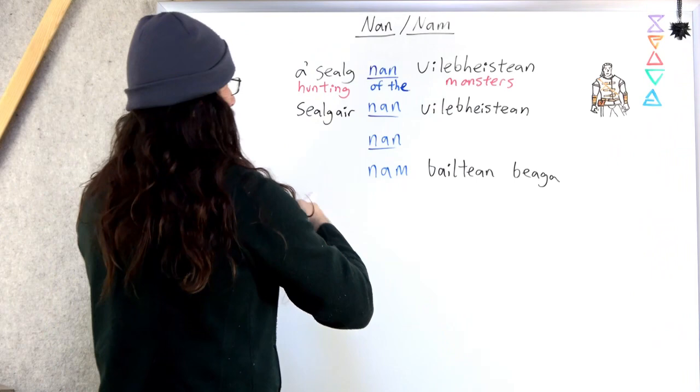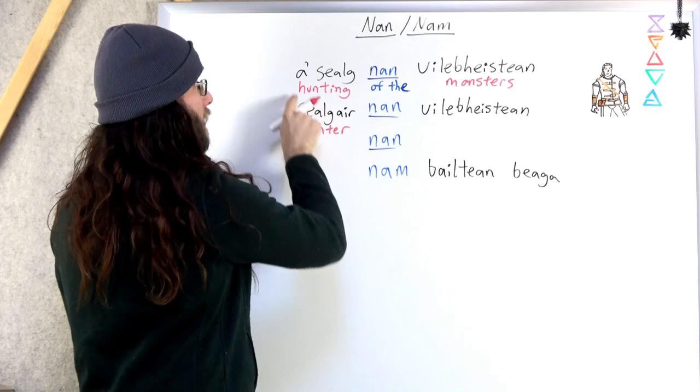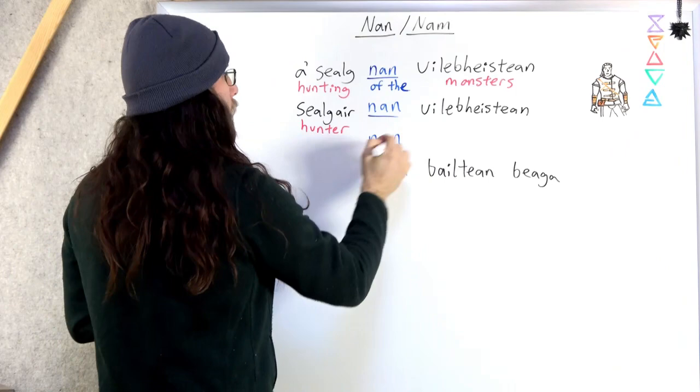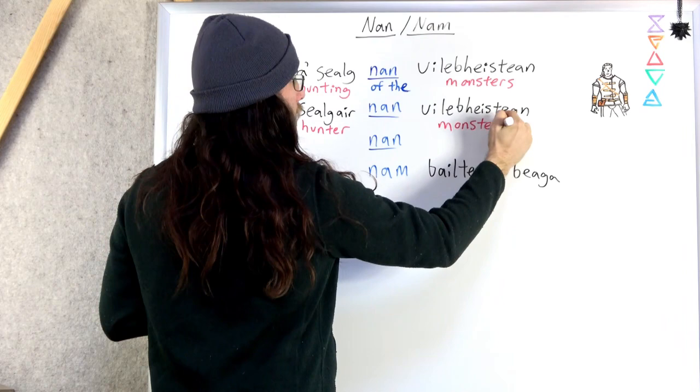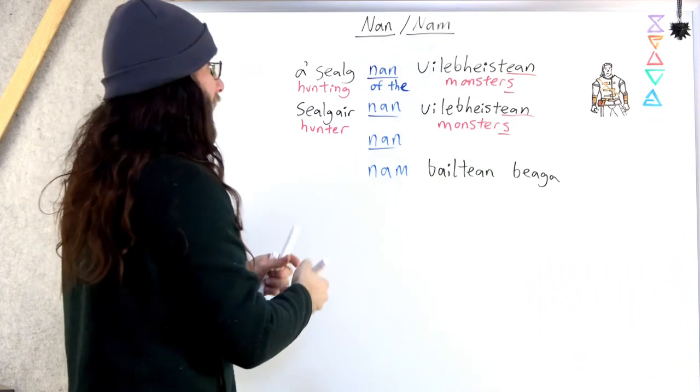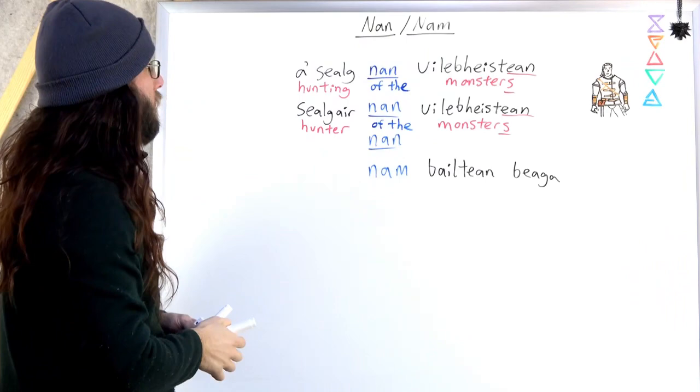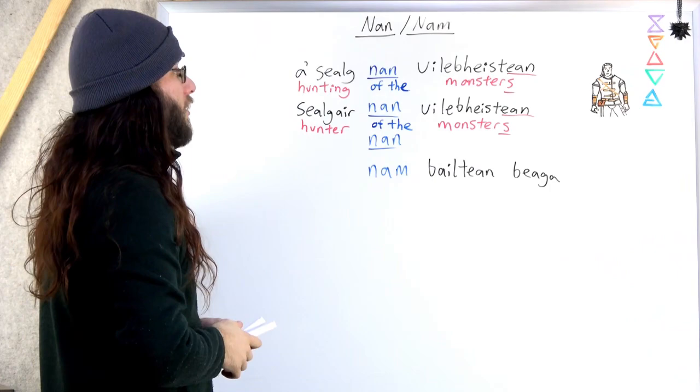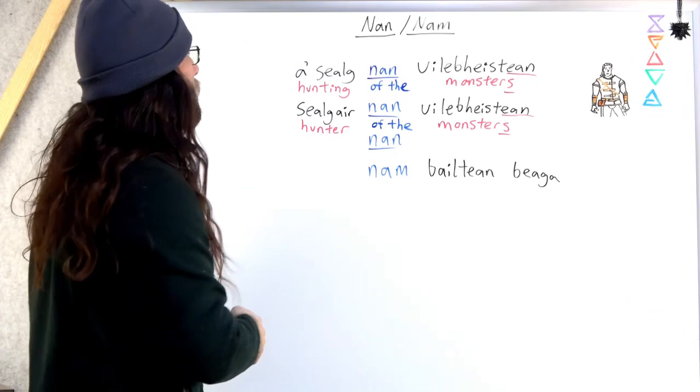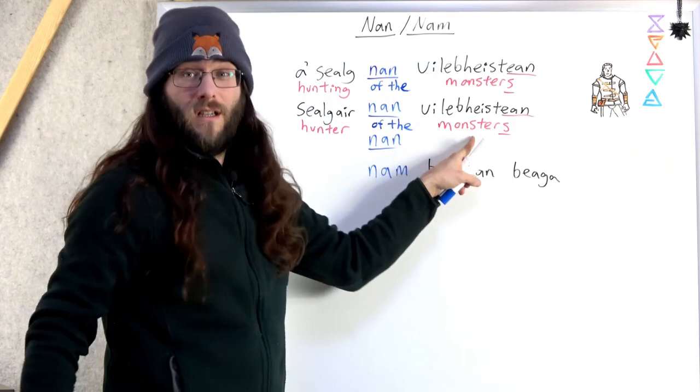Coming down here, a similar example. Geralt, our friend Geralt here, is a shalak nan uleviščin. Hunter. So this is the thing. This is the action. Notice they're very similar. They have the same root. Shalak nan uleviščin. Hunter of the monsters. A monster hunter.